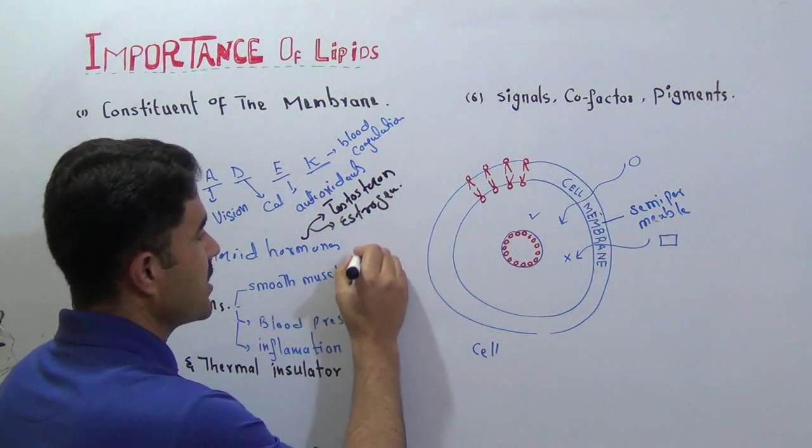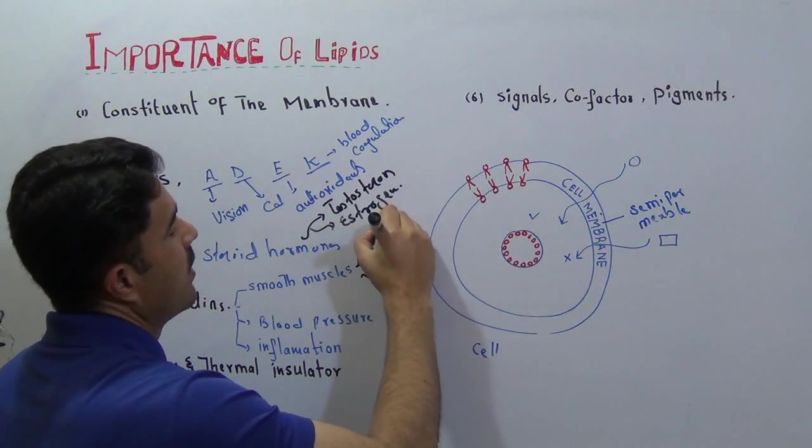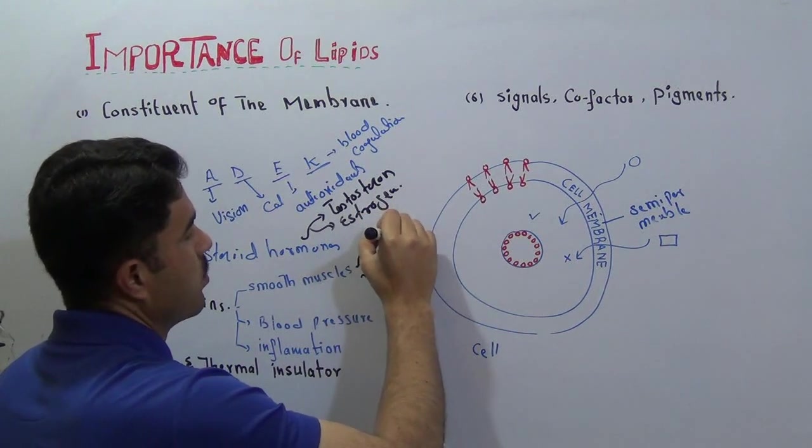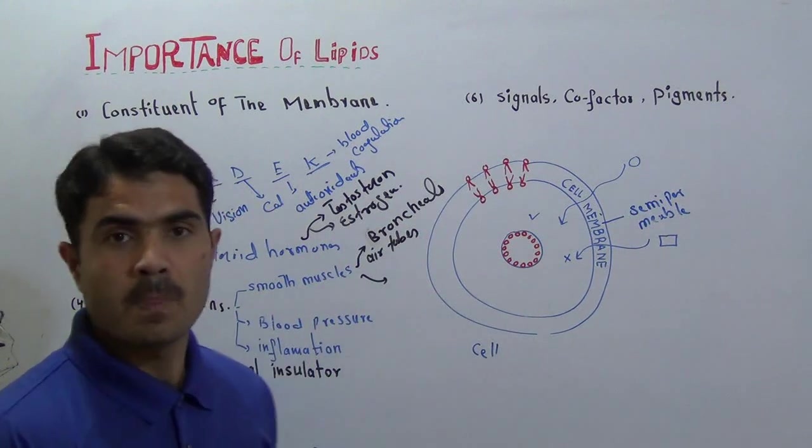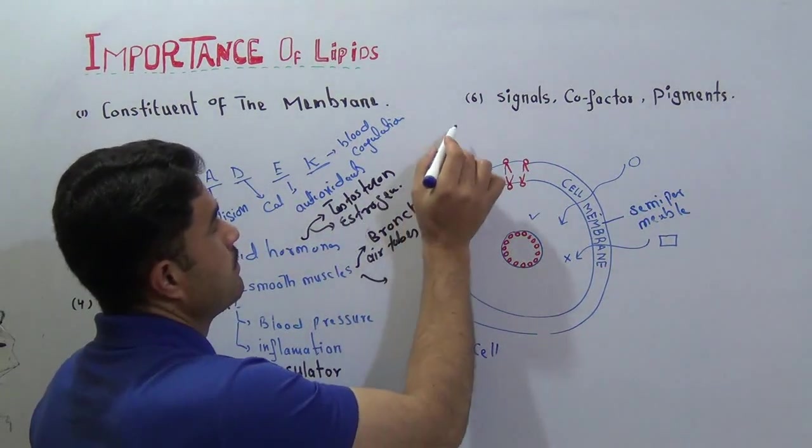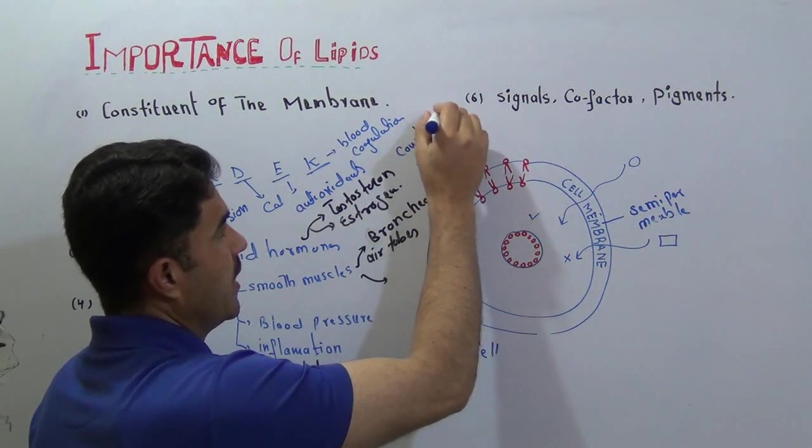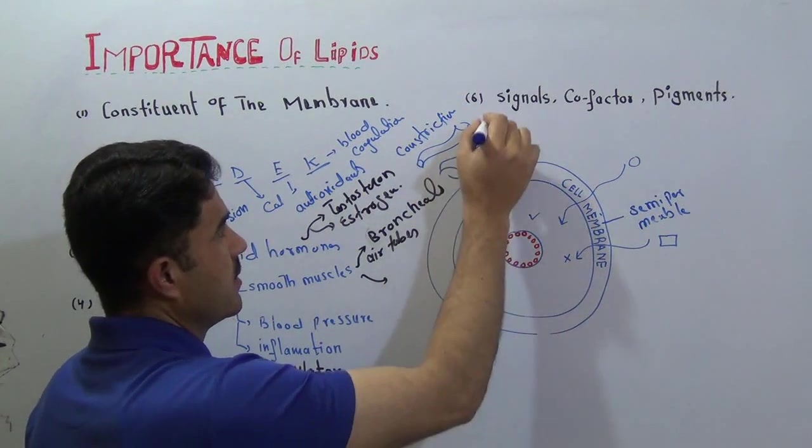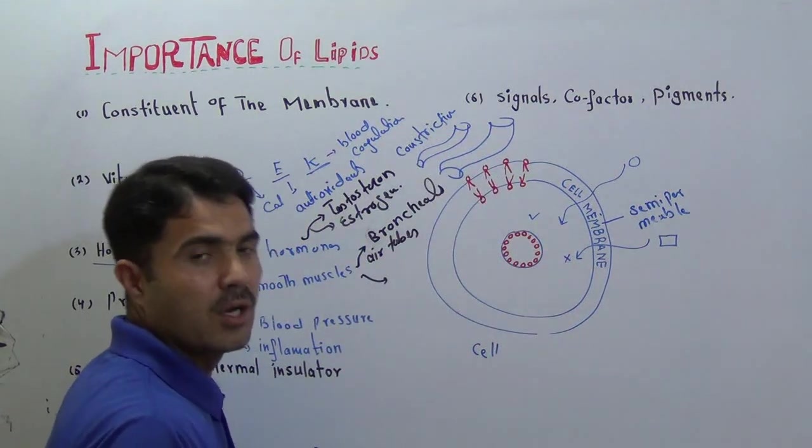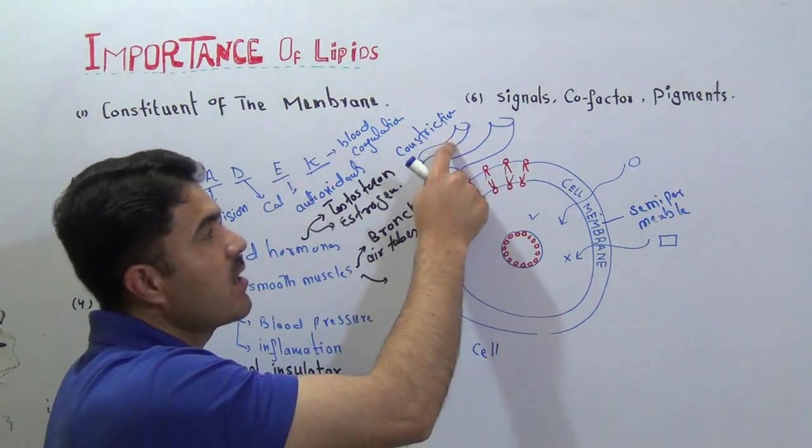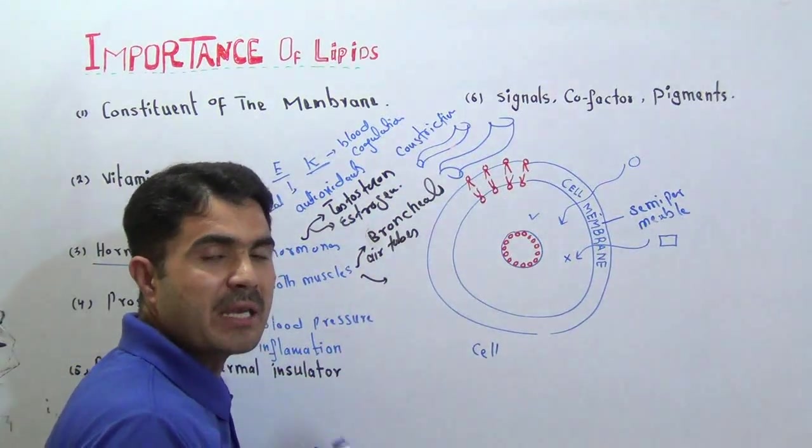The first one is they act on smooth muscle. Smooth muscles are present in special places: in your lungs, in the bronchioles or in simple words air tubules. They are involved in constriction and dilation. The diameter of this pipe is greater than this one; in this stage it is constricted, and in that stage it is dilated.